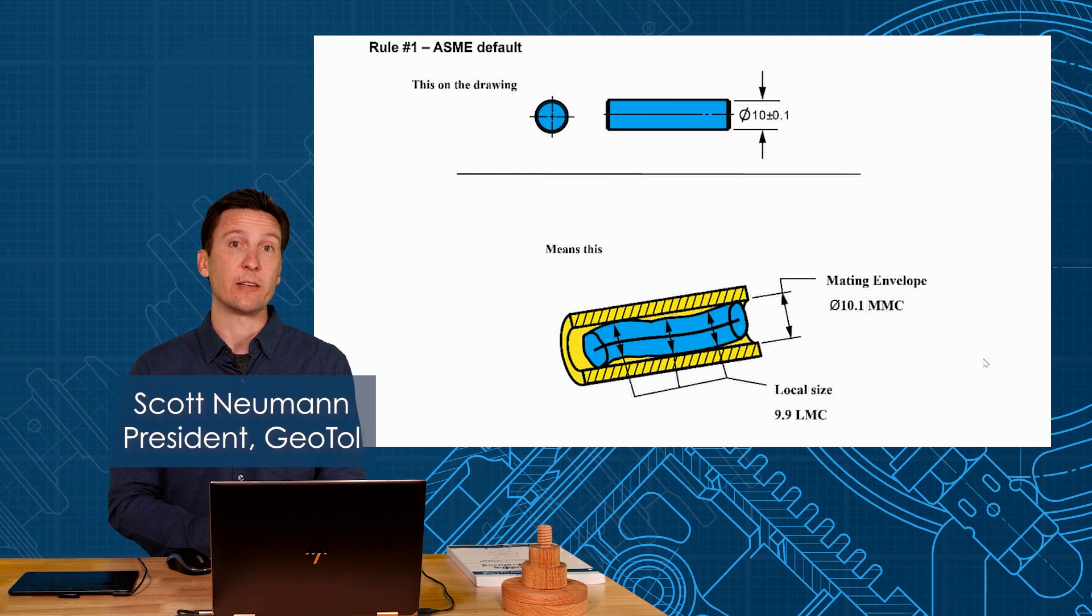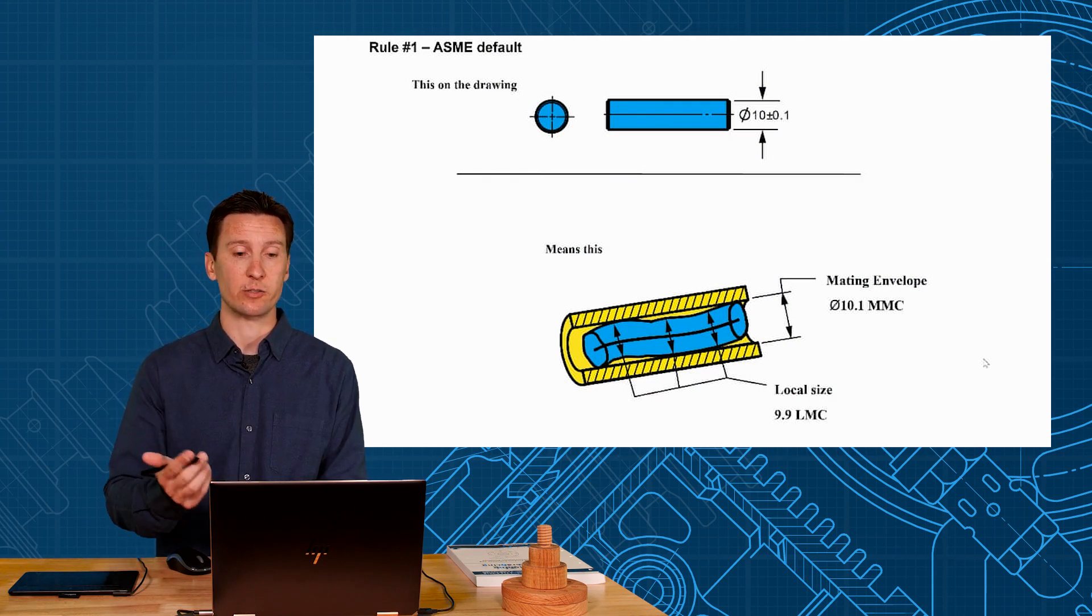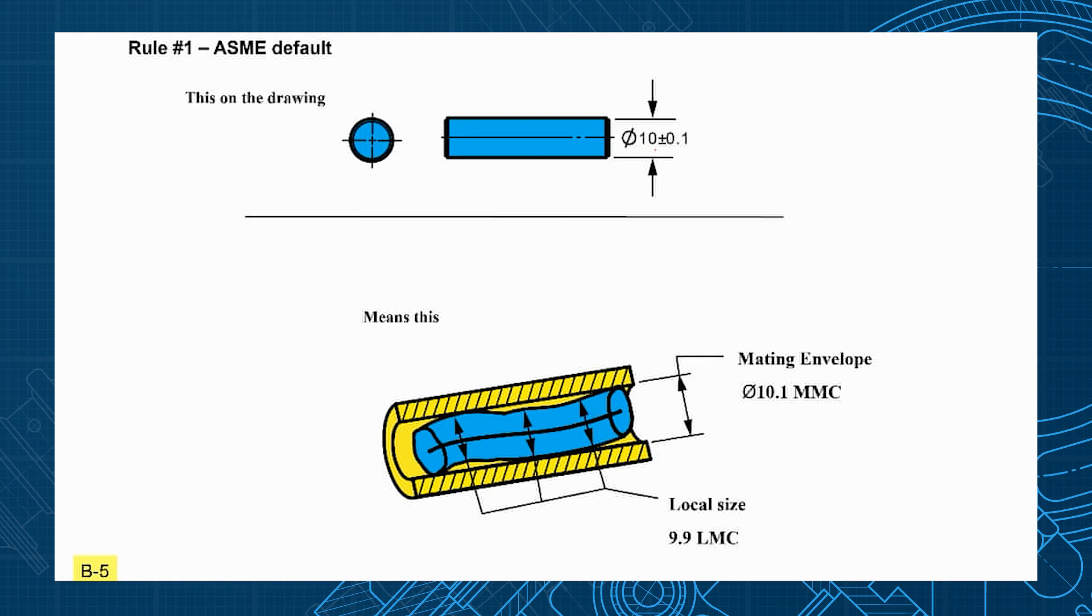Let's look at the major difference between ASME Y14-5 and ISO GPS and it has to do with size tolerance. So here we have a diameter of 10 shaft plus or minus 0.1. Now ASME states that we have two worst cases here: a 10.1 maximum material condition and a 9.9 least material condition.